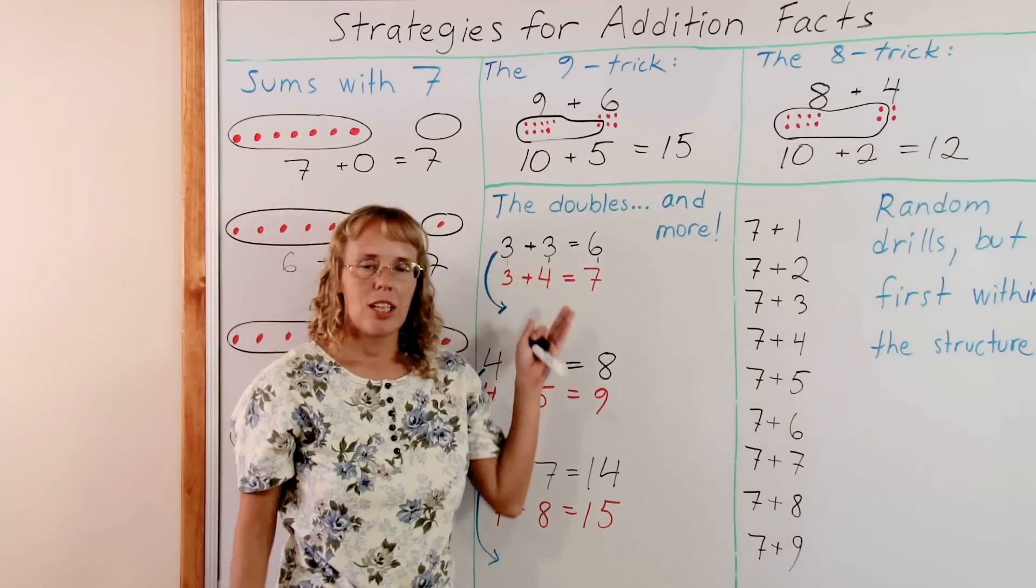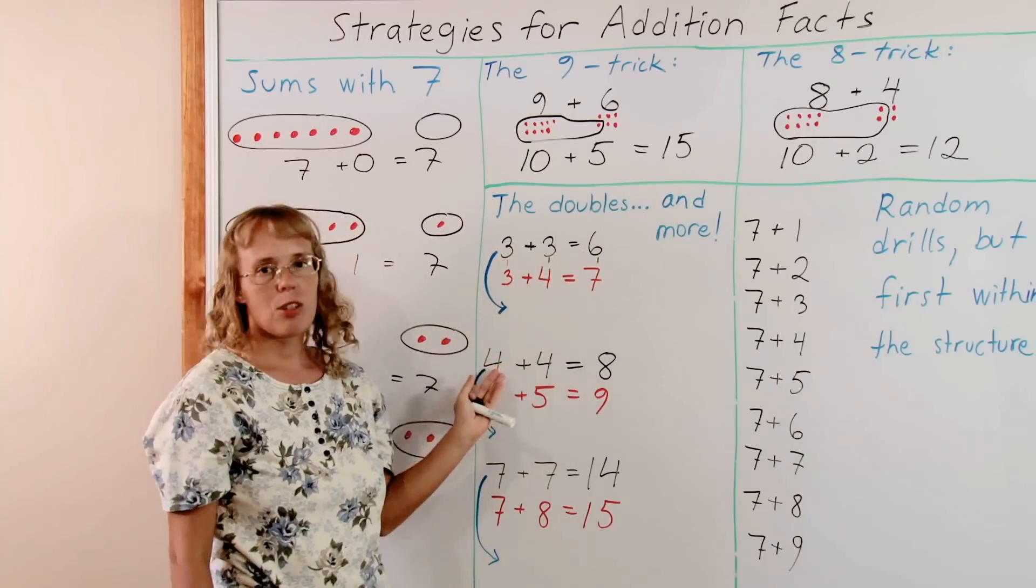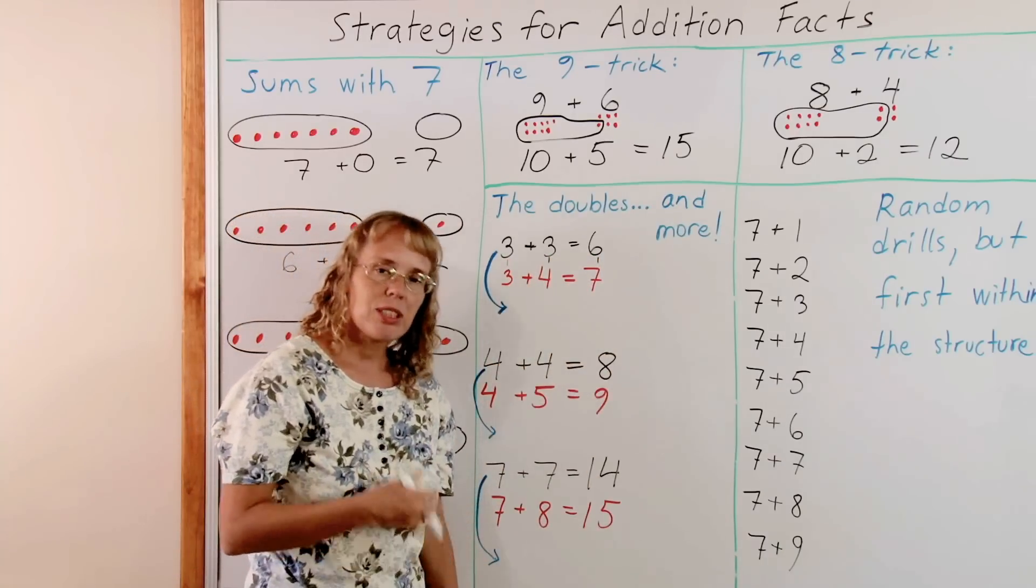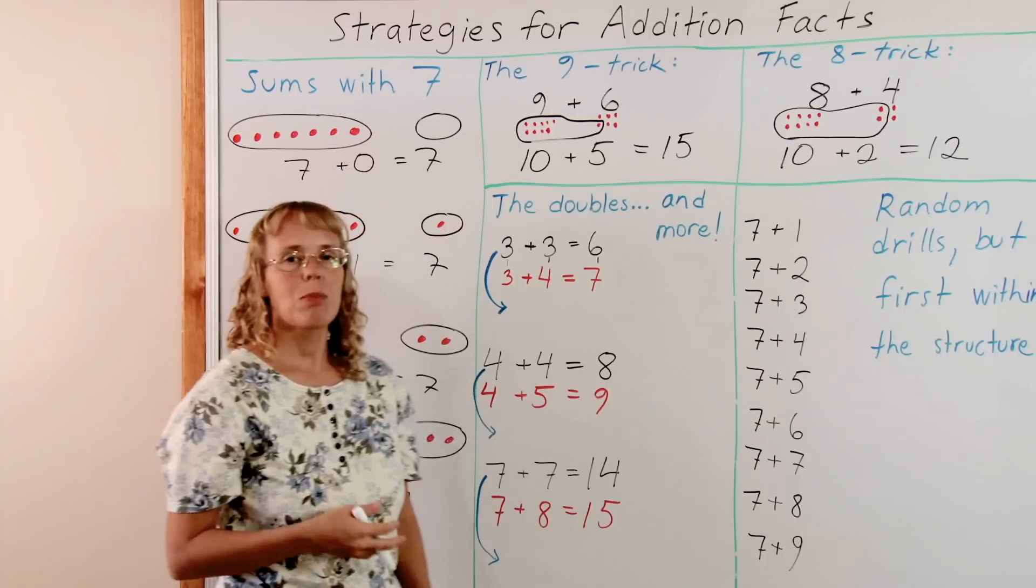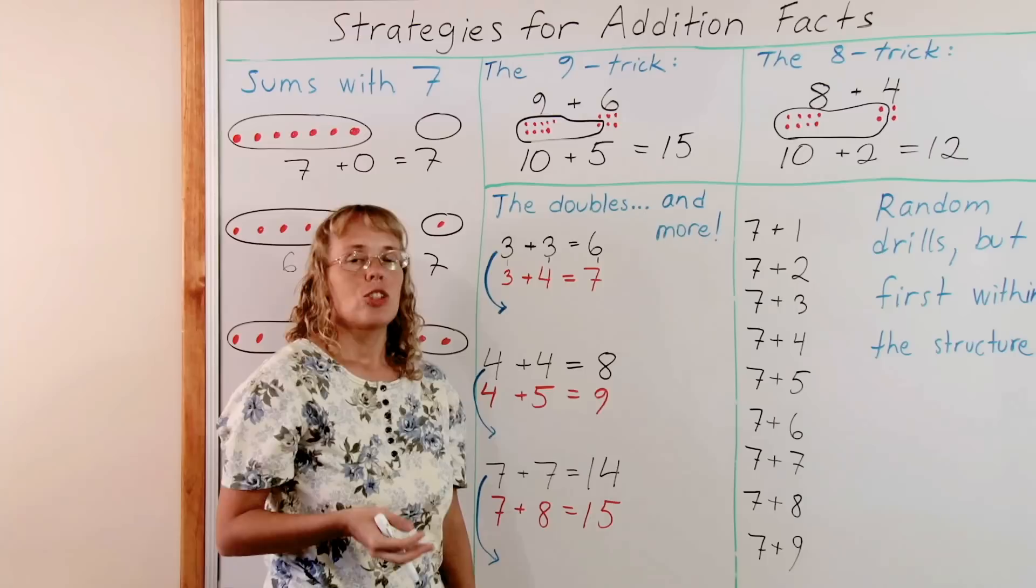The doubles are usually studied in all math books. 3 plus 3 equals 6. 4 plus 4 equals 8. 5 plus 5 equals 10. 6 plus 6 equals 12. And so on. And those children need to memorize.